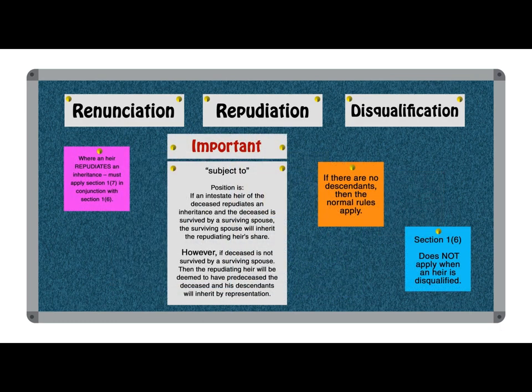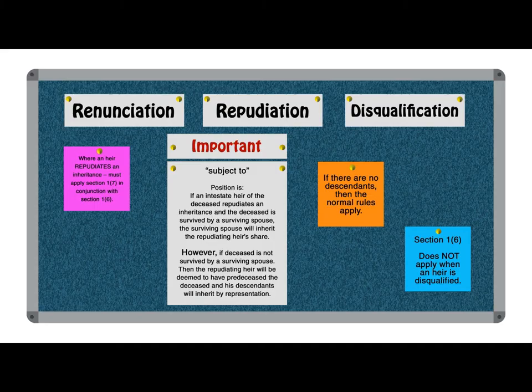It is important to note that where an heir repudiates an inheritance, we must apply section 17 in conjunction with section 16. This means that if an intestate heir of the deceased repudiates an inheritance and the deceased is survived by a spouse, the surviving spouse will inherit the repudiating heir's share. However, if the deceased is not survived by a spouse, then the repudiating heir will be deemed to have predeceased the deceased and his descendants will inherit through representation. If there are no descendants, then the inheritance will go to the other heirs.